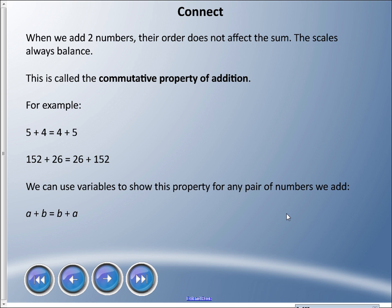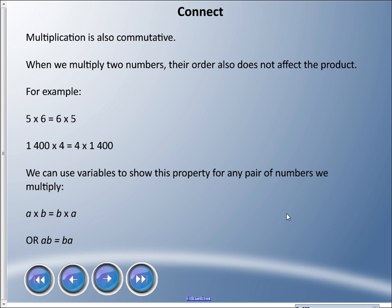For example, 5 plus 4 equals 4 plus 5. 152 plus 26 equals 26 plus 152. It doesn't matter what two numbers you use to add, it doesn't matter what order they're in. We can use variables to show this property for any pair of numbers we add: a plus b is the same as b plus a.